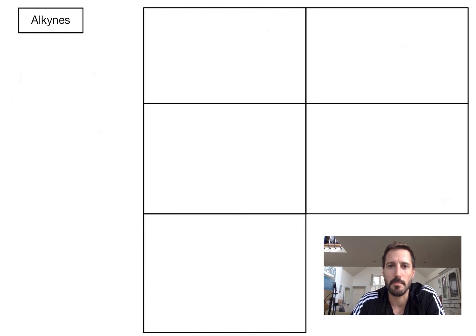In this video we're going to look at how to name the alkynes. The alkynes are a class of compounds that contain the alkynyl functional group. And what is that? Well that is a carbon to carbon triple bond somewhere in the molecule.